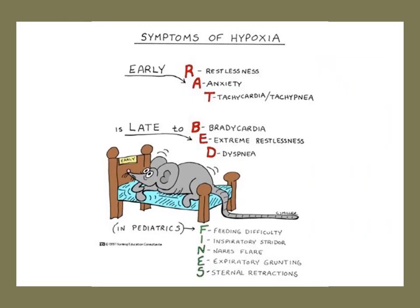What are some of the symptoms of hypoxia? For early hypoxia, you can think about the mnemonic RAT: they're restless, they may have anxiety, and some tachycardia or tachypnea. If you're seeing late symptoms of hypoxia, you can think of the mnemonic BED: bradycardia, extreme restlessness, and dyspnea.